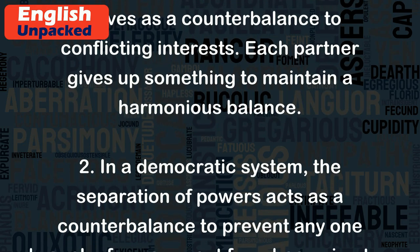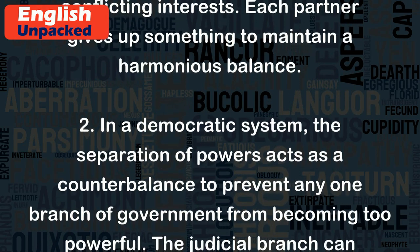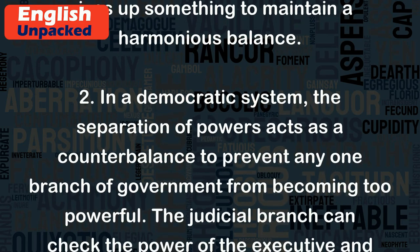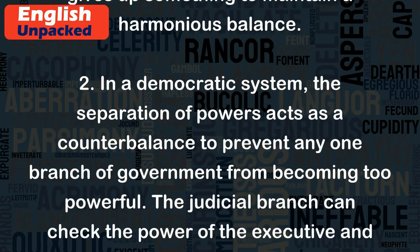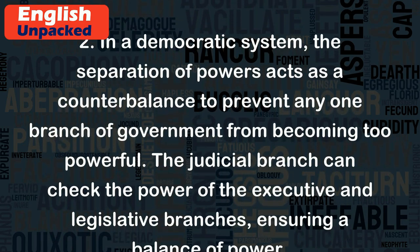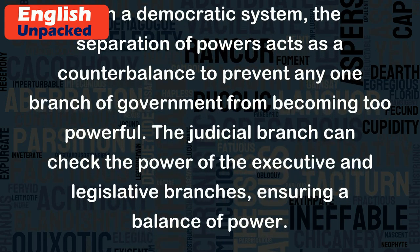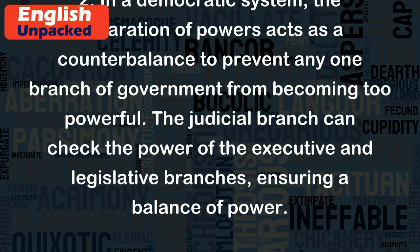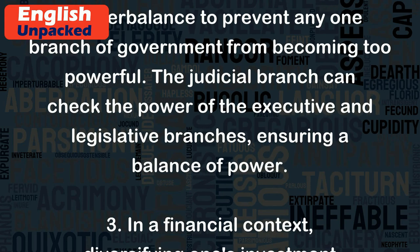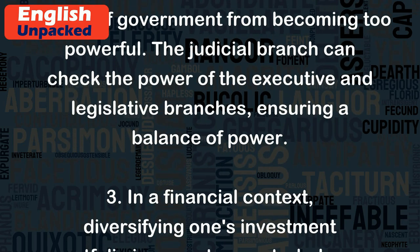2. In a democratic system, the separation of powers acts as a counterbalance to prevent any one branch of government from becoming too powerful. The judicial branch can check the power of the executive and legislative branches, ensuring a balance of power.